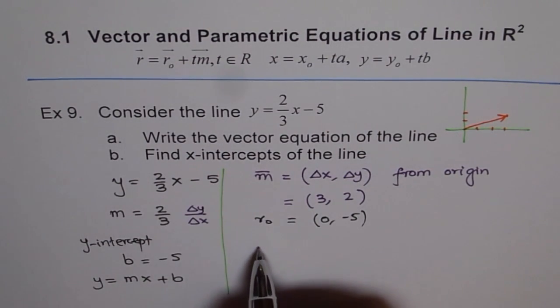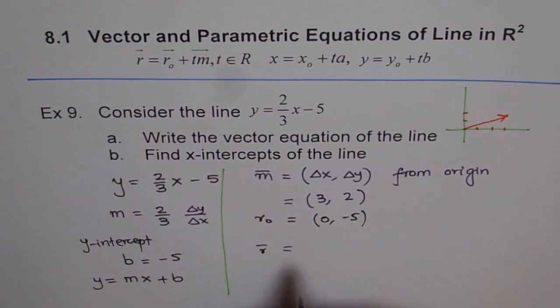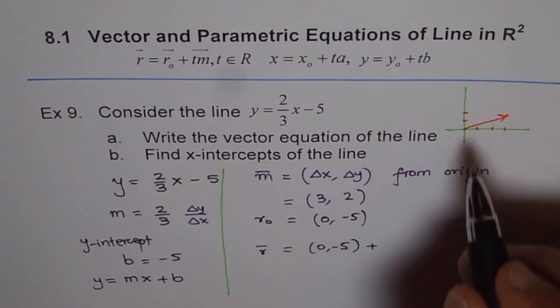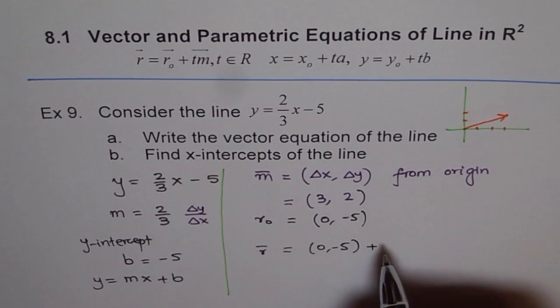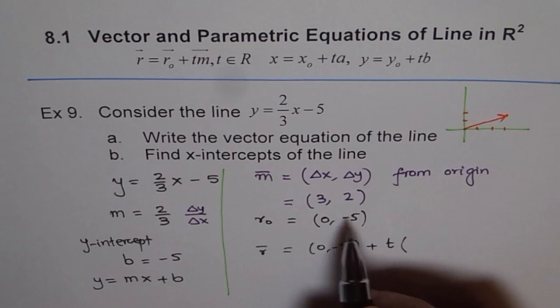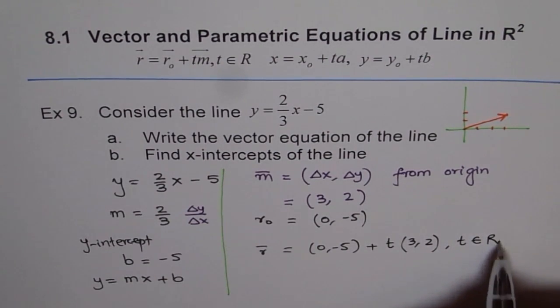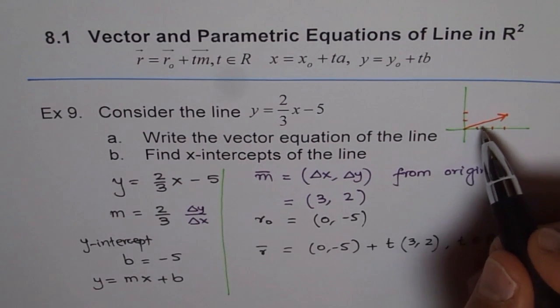So r, the vector equation, say r is equal to r0, which is the point 0 minus 5 plus any scalar multiple in this direction. That is, we can use any symbol here. Normally we are using t. So I will use t for the time being, but it could be any symbol. S, u, v, whatever you feel like. So it is t here for the moment and then the direction vector, which is 3, 2. Now t here belongs to set of real numbers. That ensures all the points in this direction.